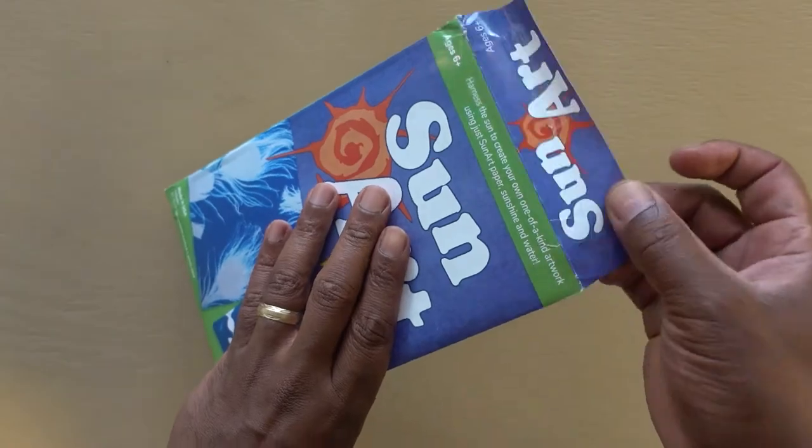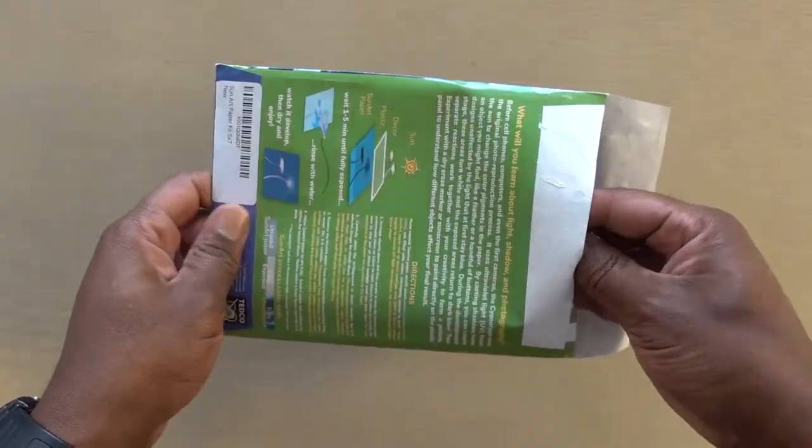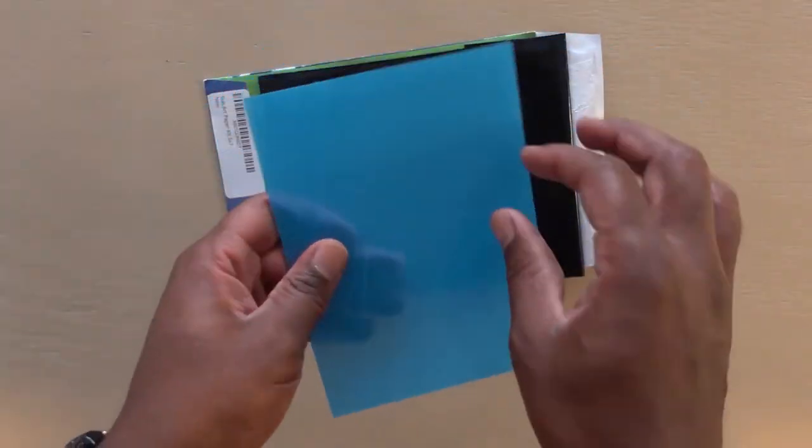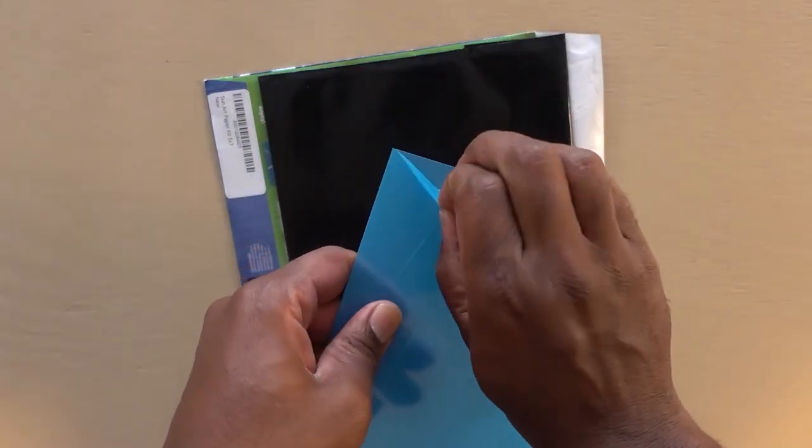First remove the contents from your cyanotype kit and peel the plastic sheathing from the plexiglass. Be sure to keep the paper inside the light-tight packaging.